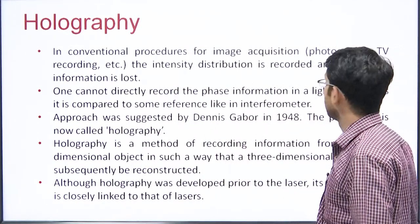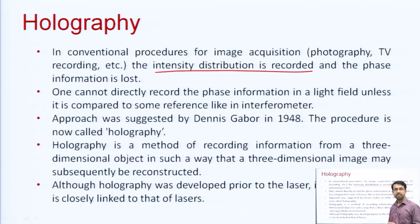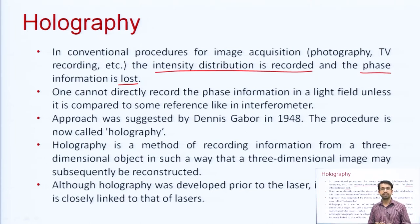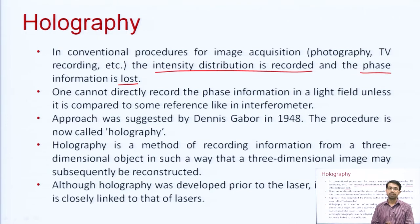In conventional procedures for image acquisition — for example, photography, TV recording, or video recording — only the intensity distribution is recorded. The information of phase is lost, so they are only 2D images. They capture information of intensity and color in the x and y axes but not in the z axis; they do not record depth. One cannot directly record phase information in a light field unless you compare it with a reference beam — when compared with a reference beam and recorded, it is called an interference pattern.